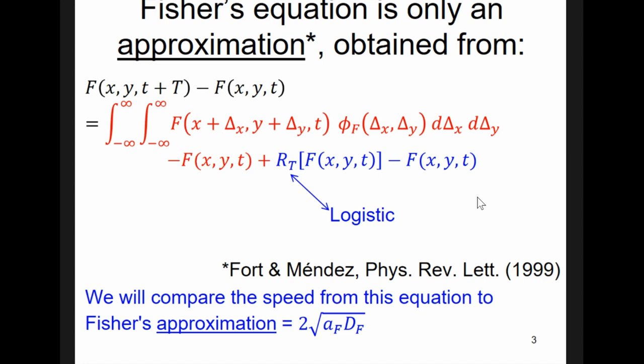Fisher's equation is only an approximation. It is not an exact result. It is an approximation that can be obtained from this equation, which in fact is much simpler, because here we have the population density change, the difference between time t and time t plus capital T, where capital T is one generation.